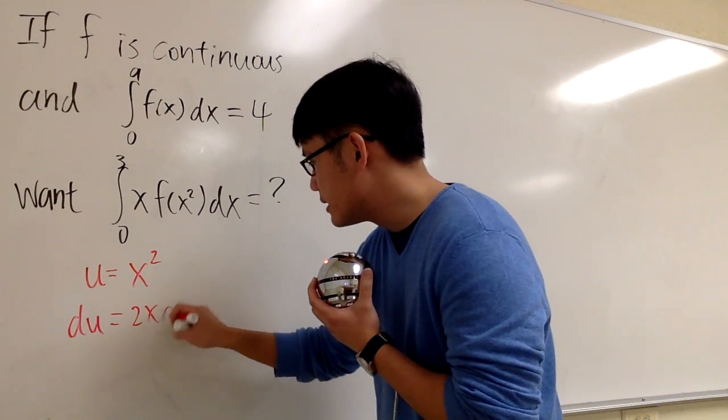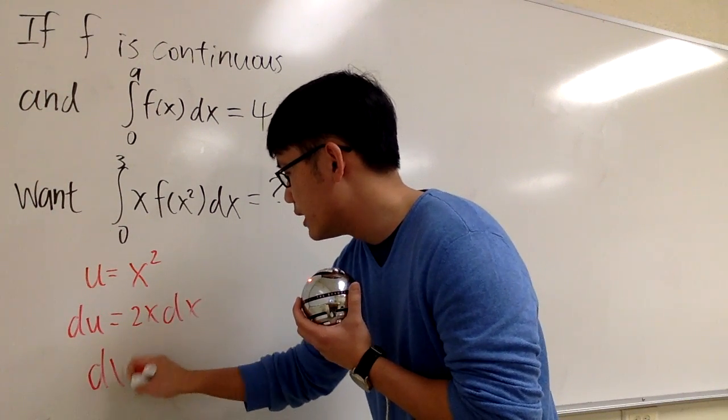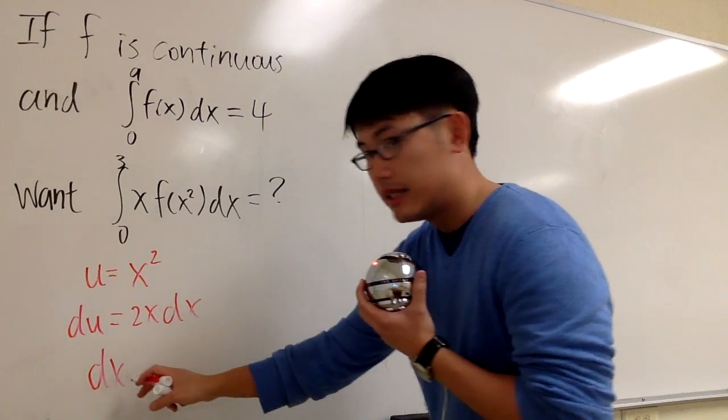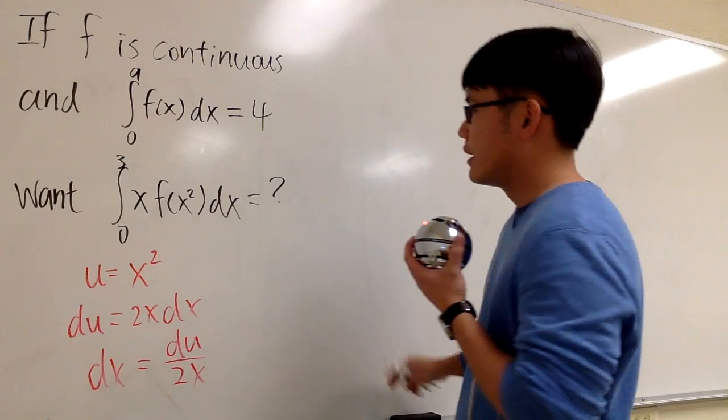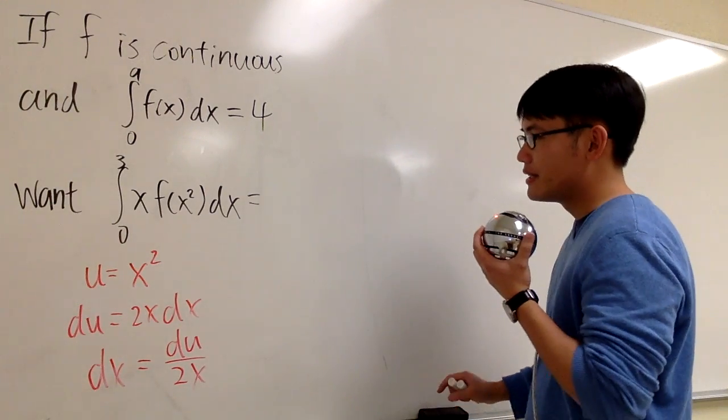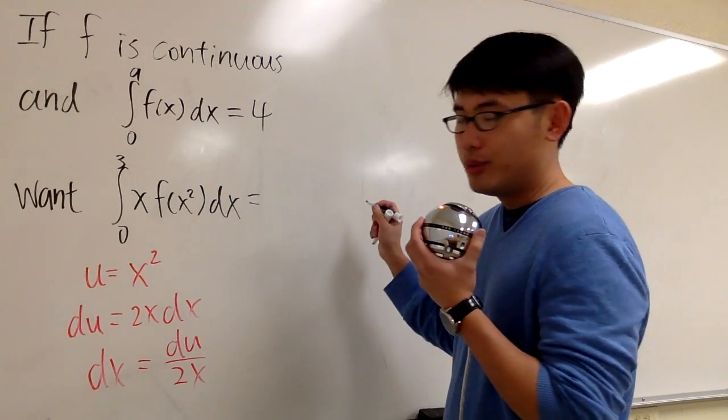du will be 2x dx, and of course, divide both sides by 2x, we get dx equals du over 2x. Let me erase the question mark. We are going to take this into the u world.